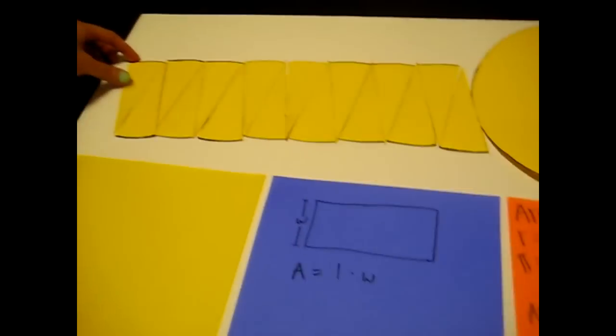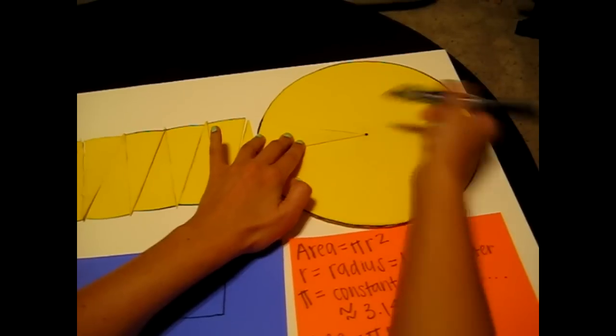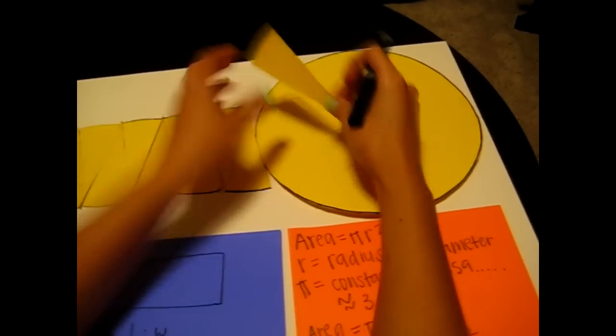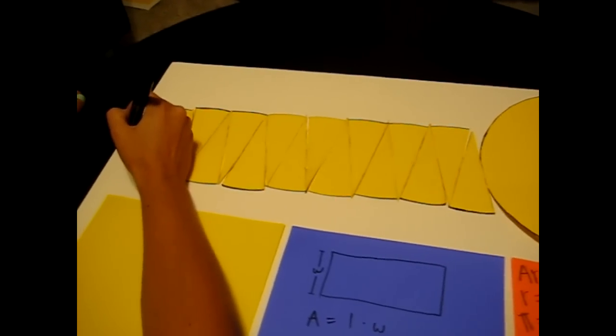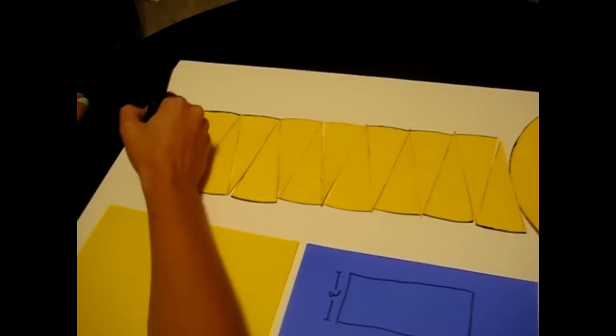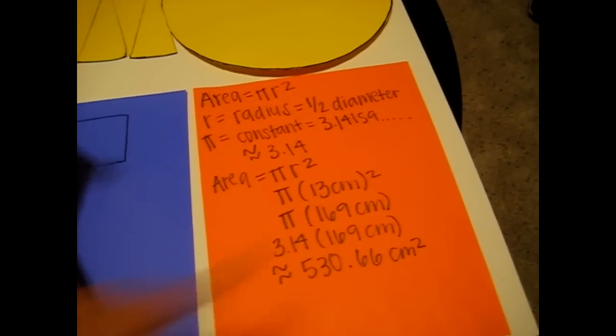Now to prove that the width of our rectangle here is equal to our radius, we can take this section, put it on top of our circle, and see that indeed it is our radius. Therefore, the width of this is equal to r, which we found earlier is equal to 13 centimeters.